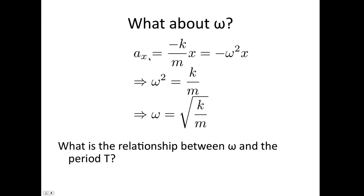So ω, we said that it satisfied the equation negative k/m times x equals negative ω squared x. So we've already shown that ω is root k/m. Now what we want to do is work out the relationship between ω and the period of the motion.